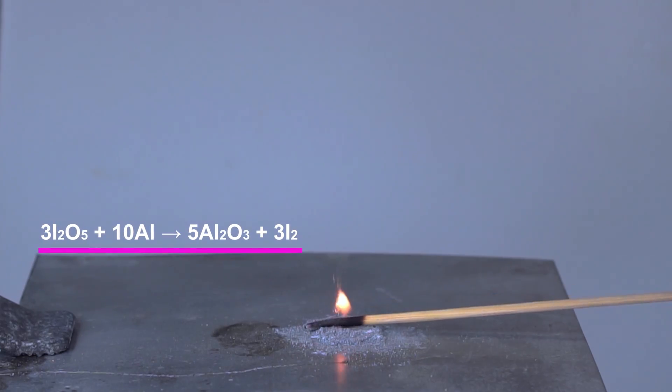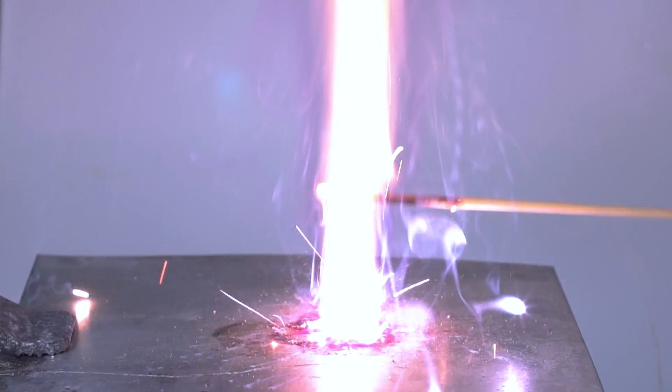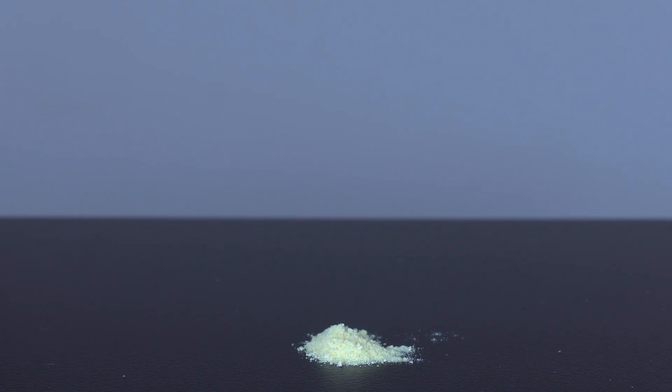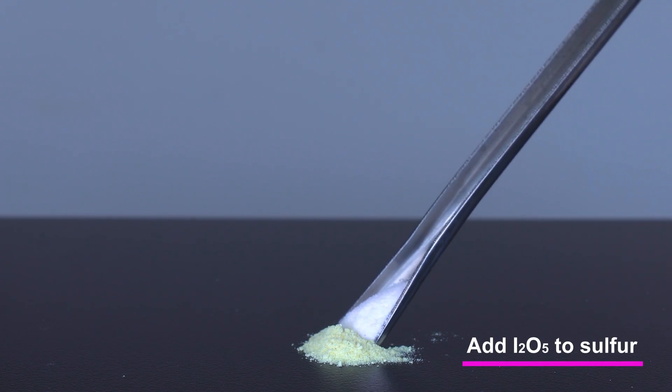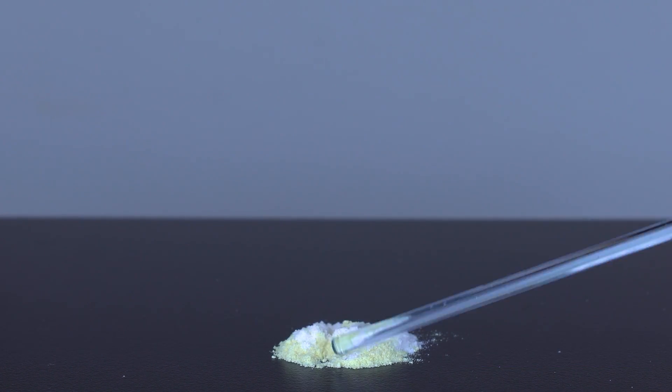This is how the concoction of aluminum powder and iodine pentoxide burns. To initiate reactions of either elemental sulfur or sugar powder with iodine pentoxide, all you need is to touch your mixture with a heated glass rod.